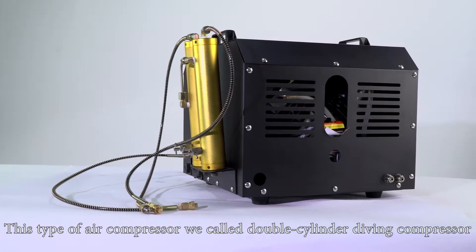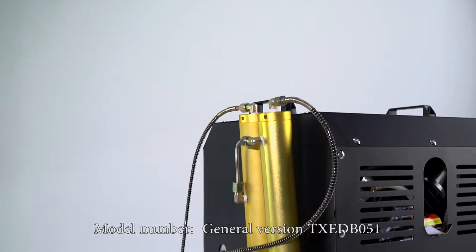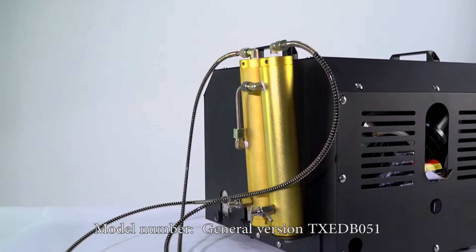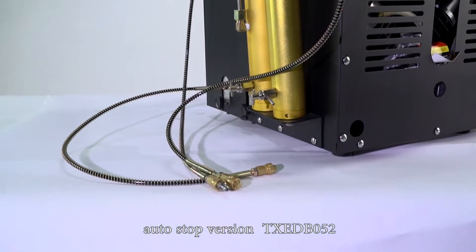This type of air compressor we call double cylinder diving compressor. Model number, general version TXED-B051, auto stop version TXED-B052.